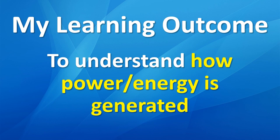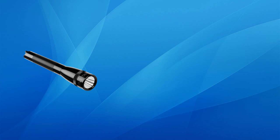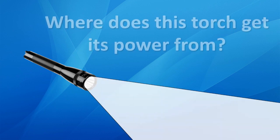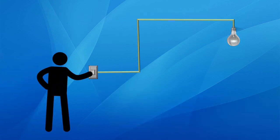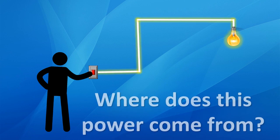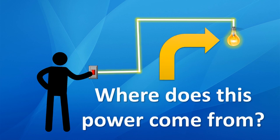Hi and welcome to today's lesson where we're going to be looking at energy. We're doing a big focus on how energy is generated and the kind of energy resources available to us. If I was to ask you where this torch gets its power from, you'd say a battery — and you'd be correct. But if we apply that same question to your house, where you flick a switch and a light turns on, where does the power come from? That's what we're focusing on: how energy gets produced for a whole city or country.